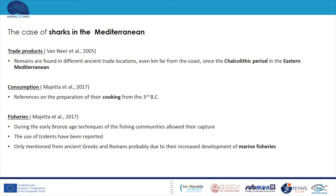We are now going to examine the case of sharks in the Mediterranean, which represents one of the areas with the most ancient evidence of interaction between humans and sharks. Sharks were trade products since the Chalcolithic period in the Eastern Mediterranean, and their remains are found in ancient trade locations and markets far from the coastline. Ancient people also ate shark meat, and there are references describing the preparation of shark cooking. Sources about ancient marine fisheries mainly come from ancient Greeks and Romans, who first developed marine fisheries, and during that age fishing communities developed techniques and specific tools that allowed people to capture sharks.